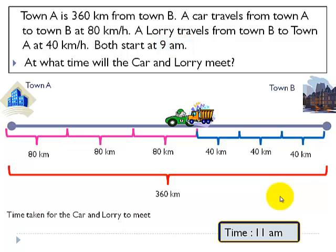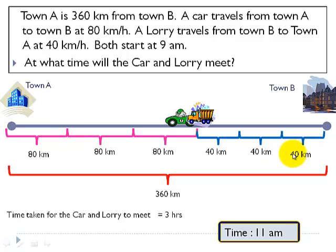How did we find that? This just illustrates how we calculate. When the car traveled 80 kilometers and the truck traveled 40 kilometers, that is a total of 120 kilometers per hour covered together.